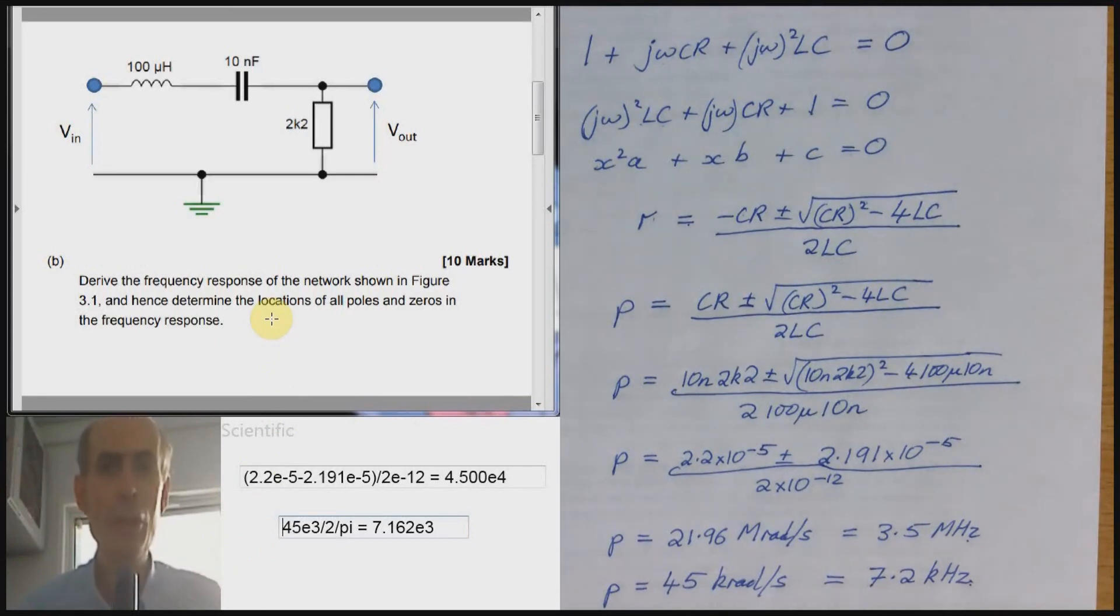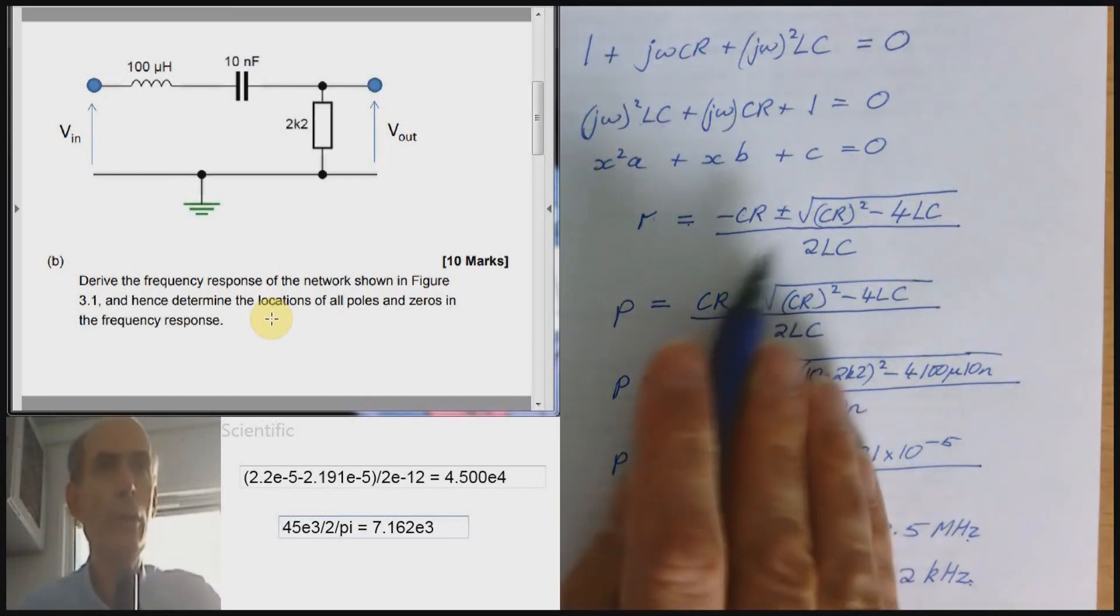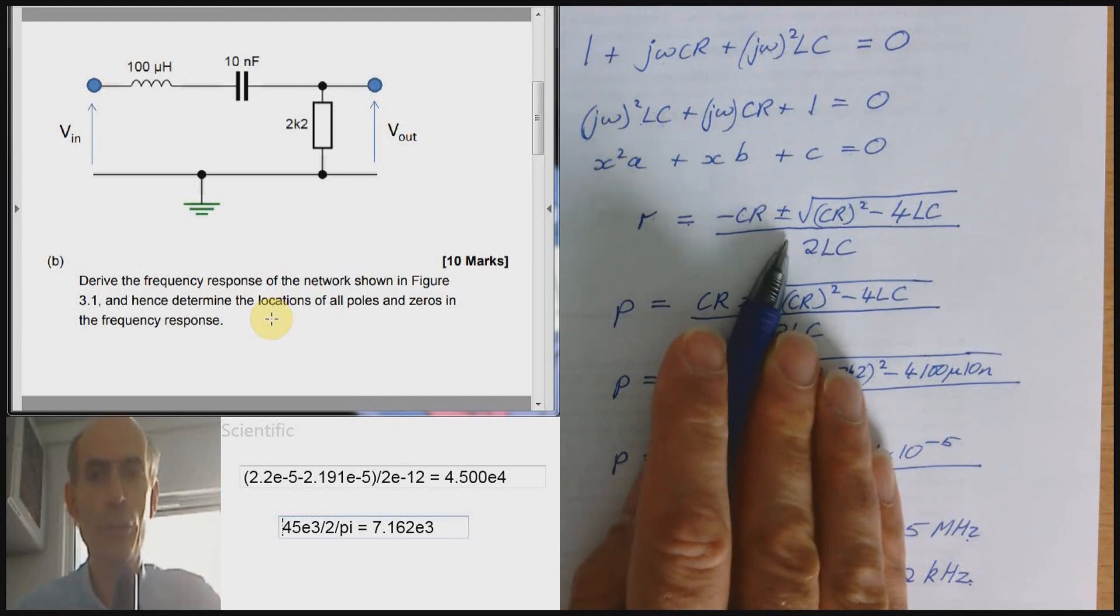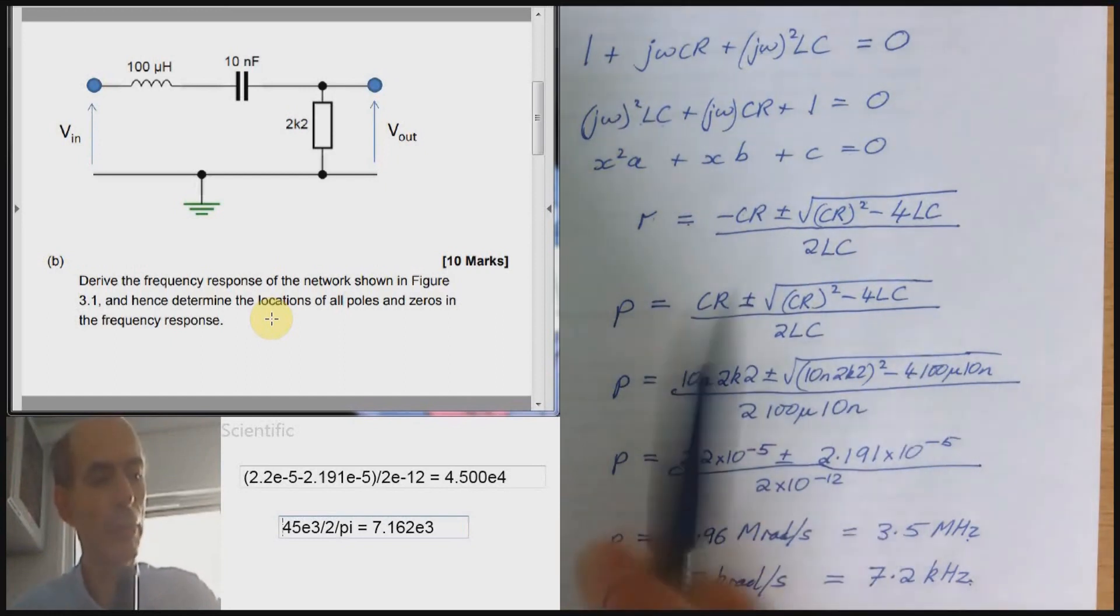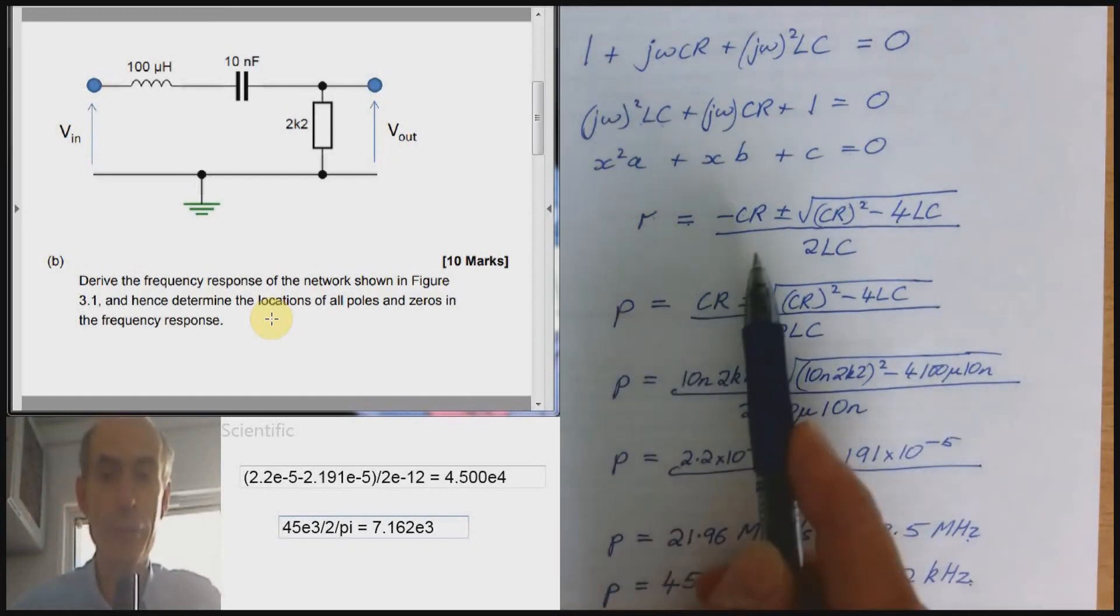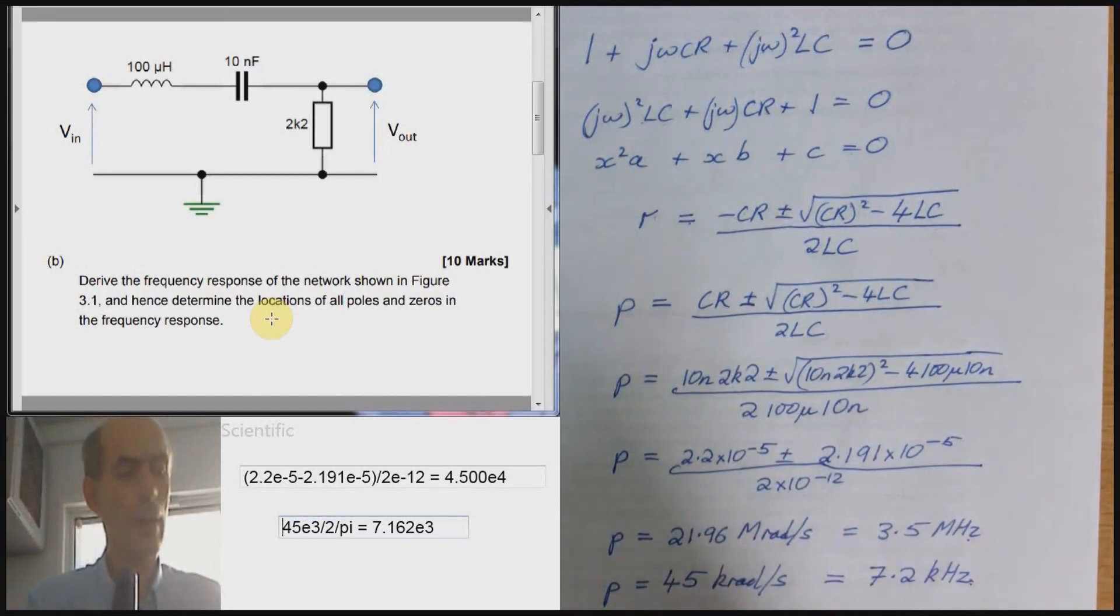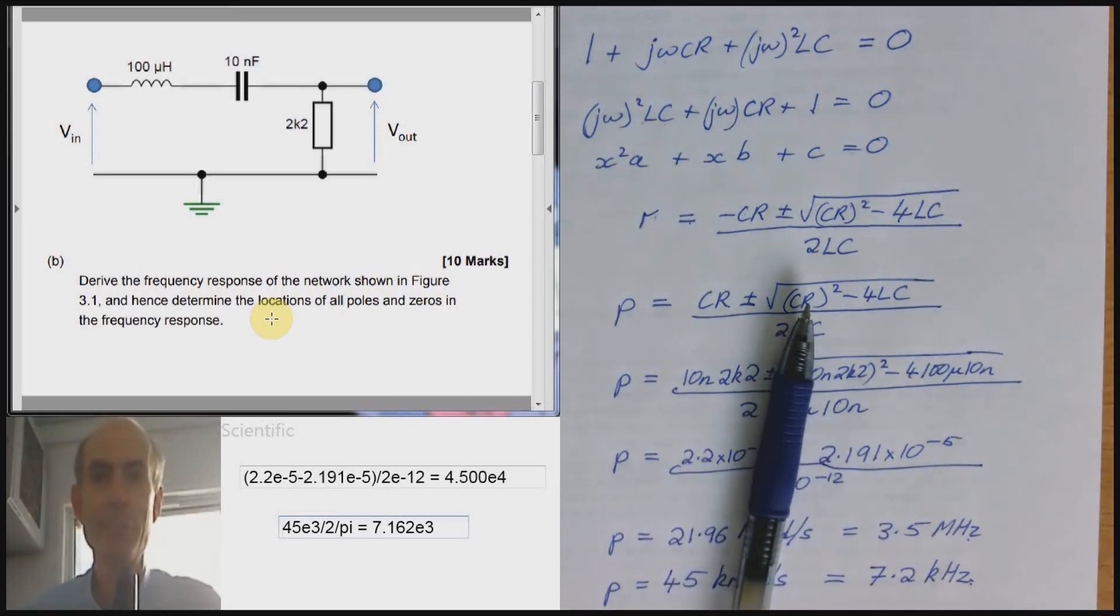As I say, there's no real need to learn any complicated formulas, but you will need to use the quadratic equation if you've got a second order system and you can't remember the equation for getting poles from the resonant frequency and the Q factor. Right. End of part B. And all I have time for in this first video. I will carry on with the next one. See you in part two.